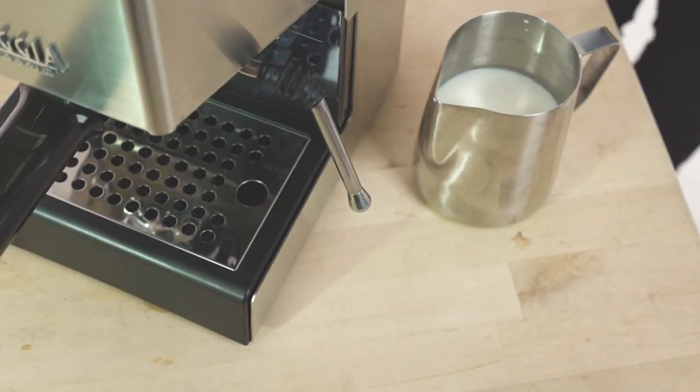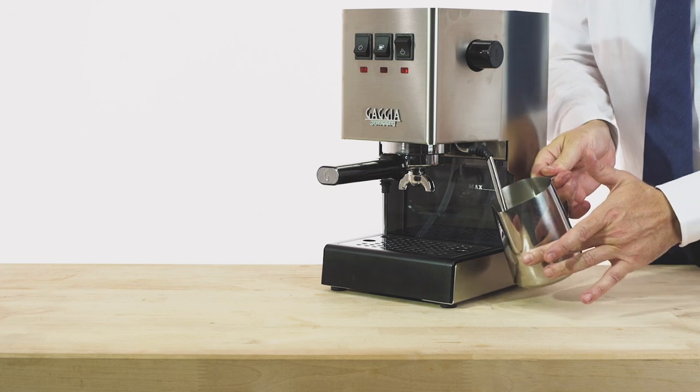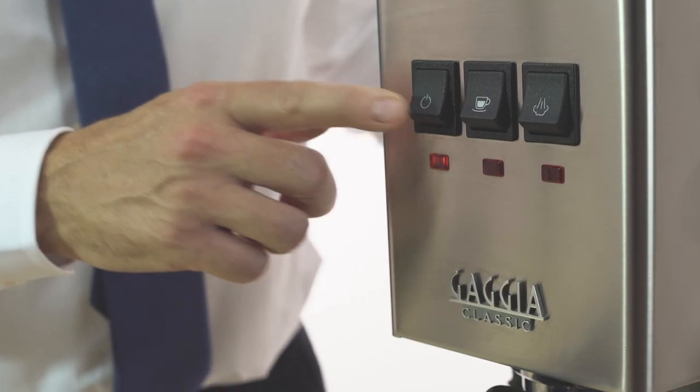Before frothing, it is important to slightly move the steam wand outwards in order to insert the jug directly under it. Now it's time to switch the classic Gaggia on.